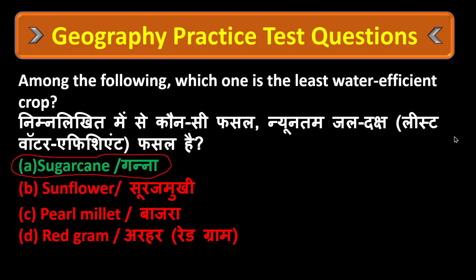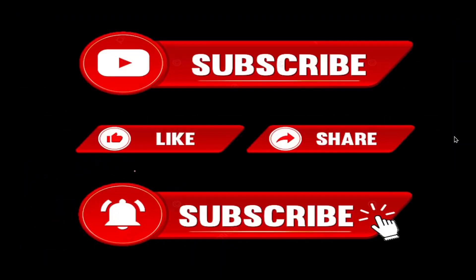Sugarcane is the least water-efficient crop compared to sunflower, pearlmillet, and red gram. Please subscribe, like, and share.